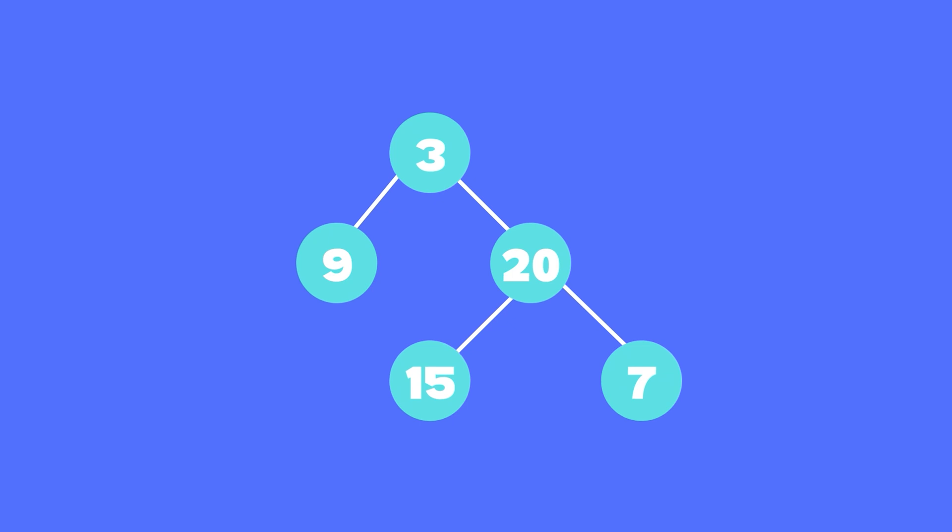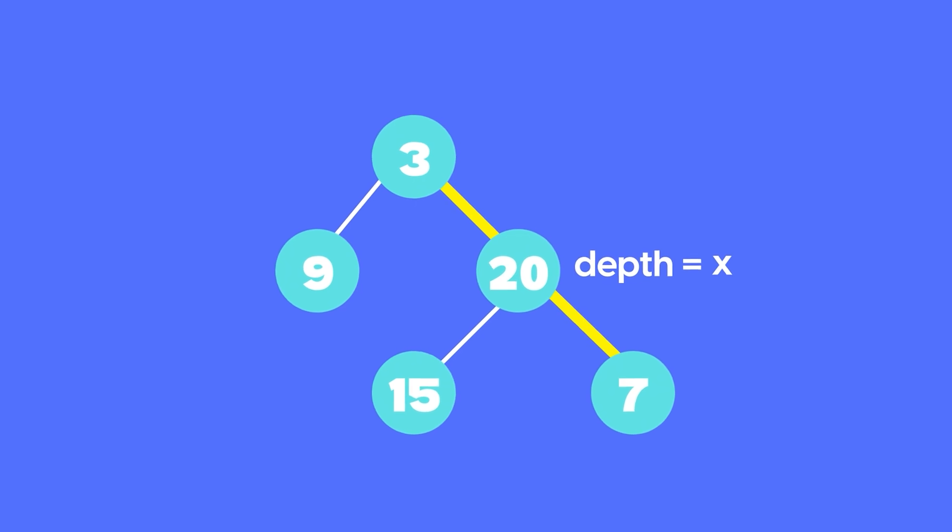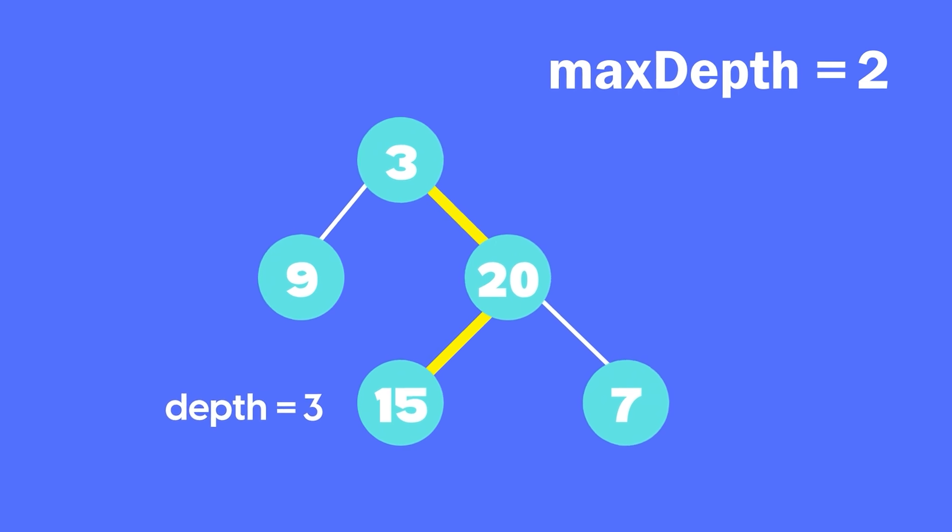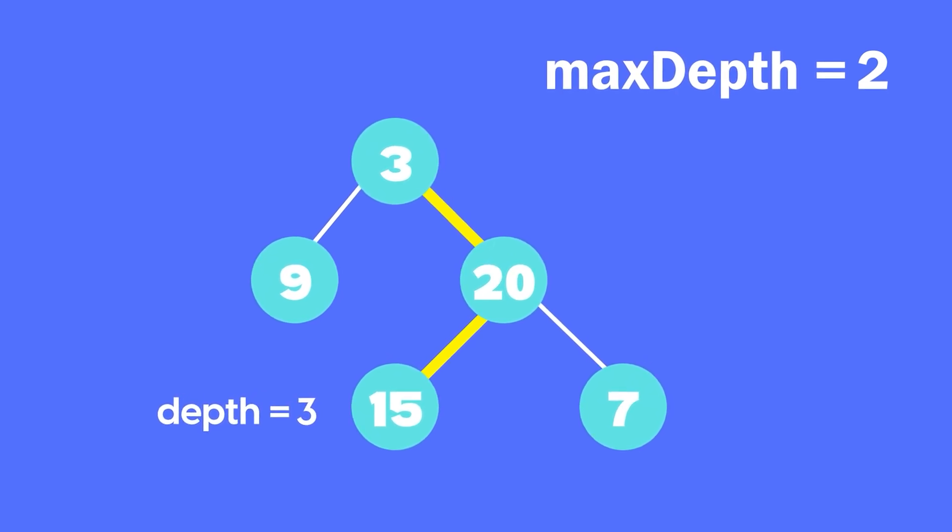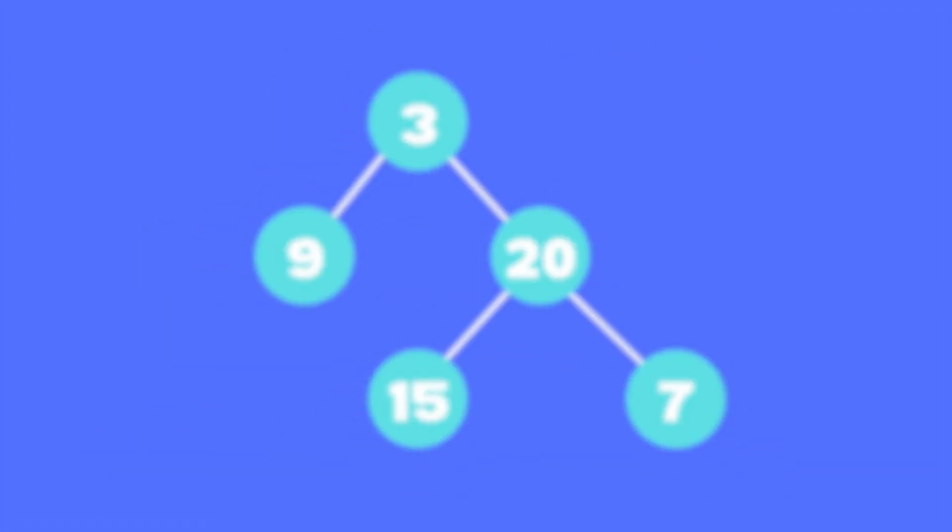Top-down approach is very simple. In this approach, we start at the root node and go down all the possible paths to a leaf node. As we are traversing a path, we keep track of the current depth. And whenever we reach a leaf node, we compare its depth to the maximum depth of any leaf node that we have seen so far. And if it's more than the max depth seen so far, we update the max depth.